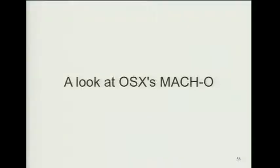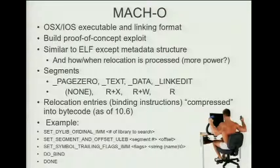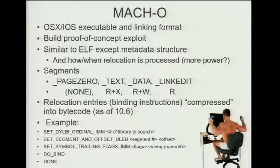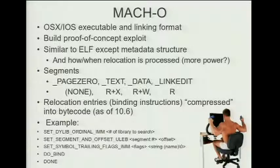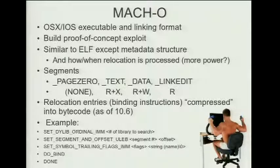Now I want to move into Mach-O. If you're not familiar with it, it's the executable and linking format for OS X and iOS. I built a proof-of-concept exploit — it's preliminary work, but worth showing because I don't see much out there currently about Mach-O other than very high-level things. It's very similar to ELF in how it processes things to an extent, though the metadata is structured very differently, and it differs in how it processes relocation. It might be a little more powerful — but we already have Turing-complete arbitrary computation with ELF, so there are just some really interesting things we might be able to do with Mach-O.